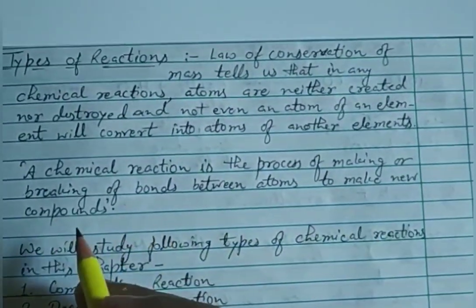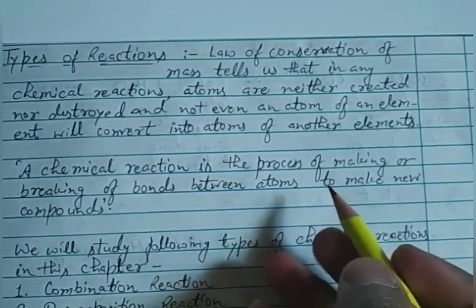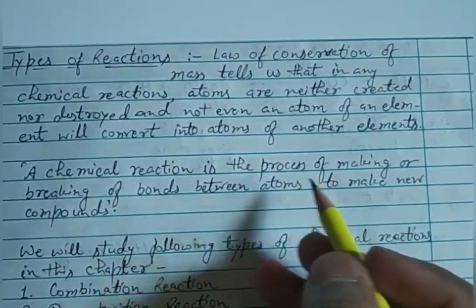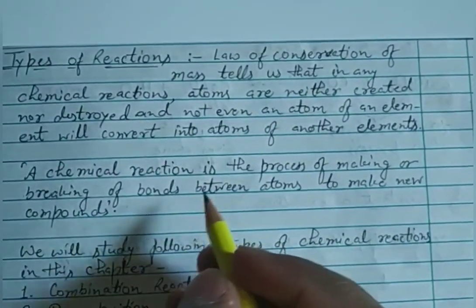For example, C + O2 (carbon plus oxygen): initially, the bonding was between oxygen and oxygen atoms only, and carbon was free. But when carbon was burnt in the presence of oxygen...